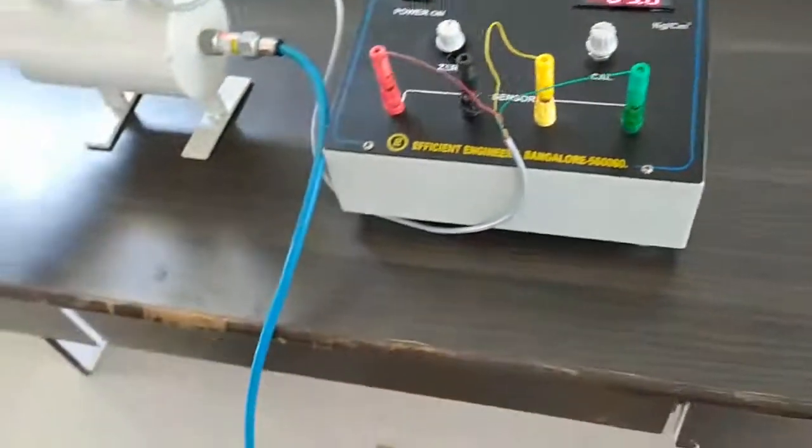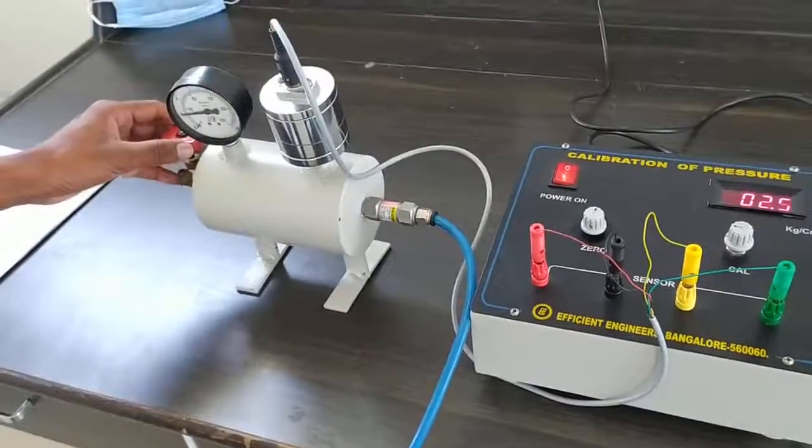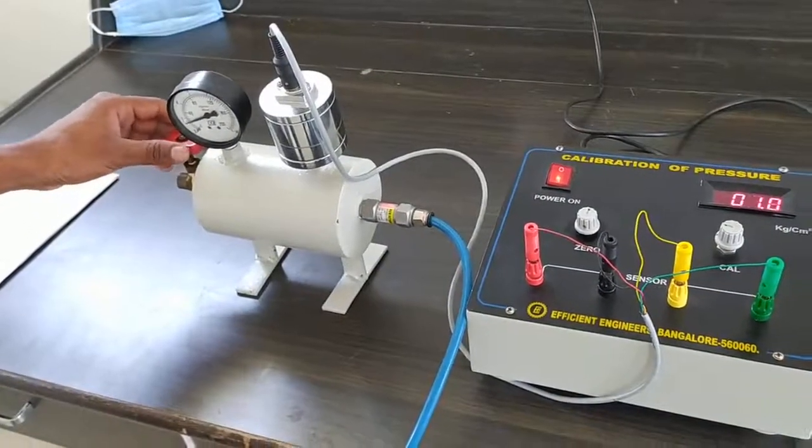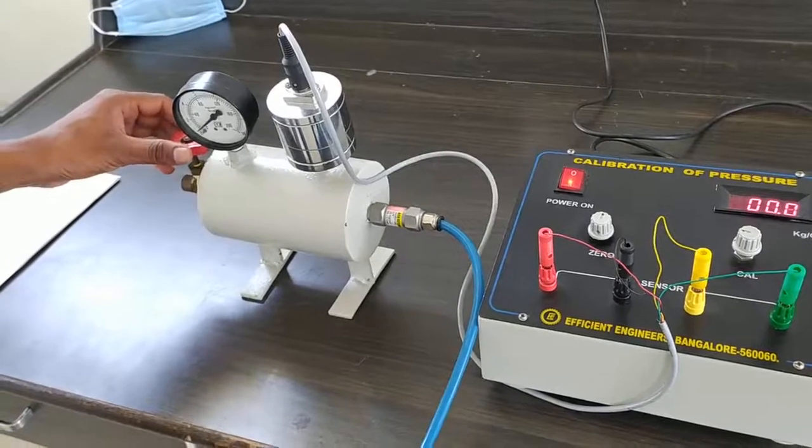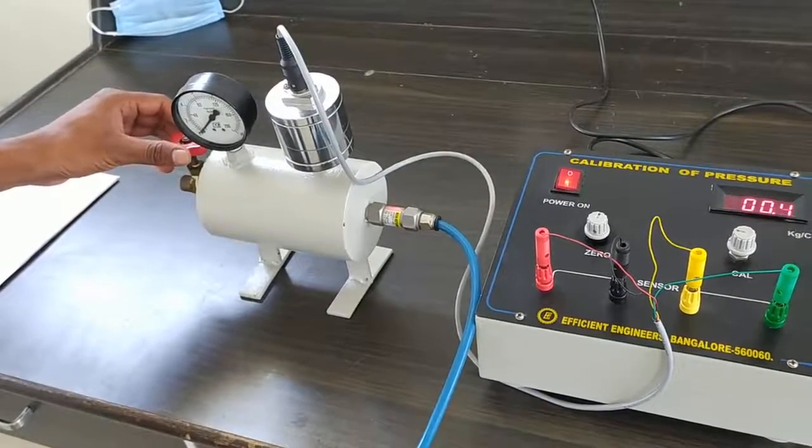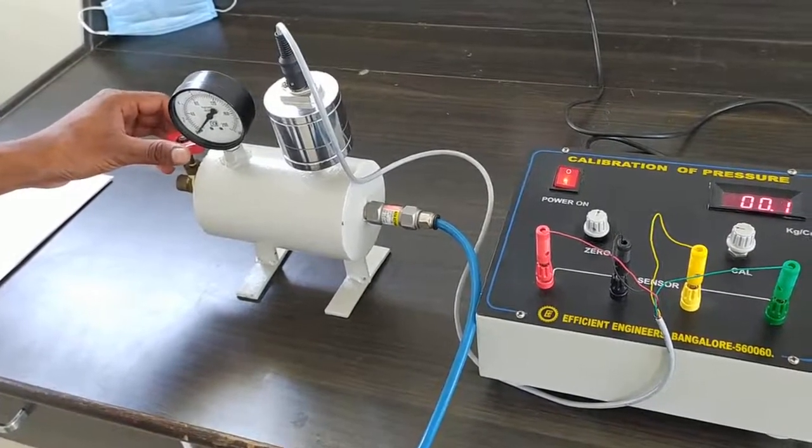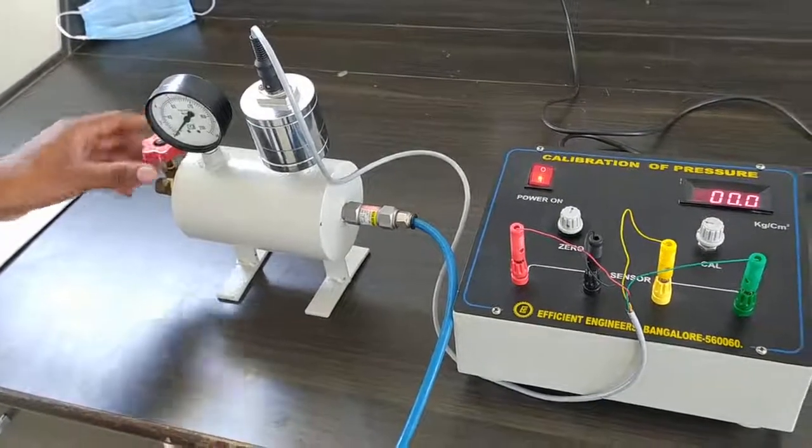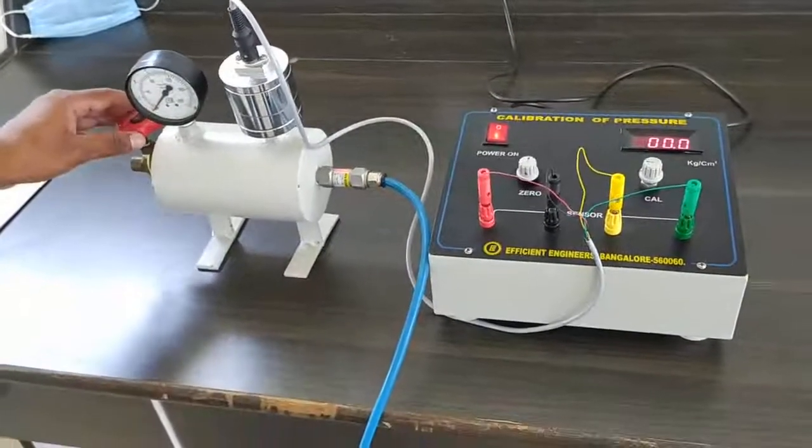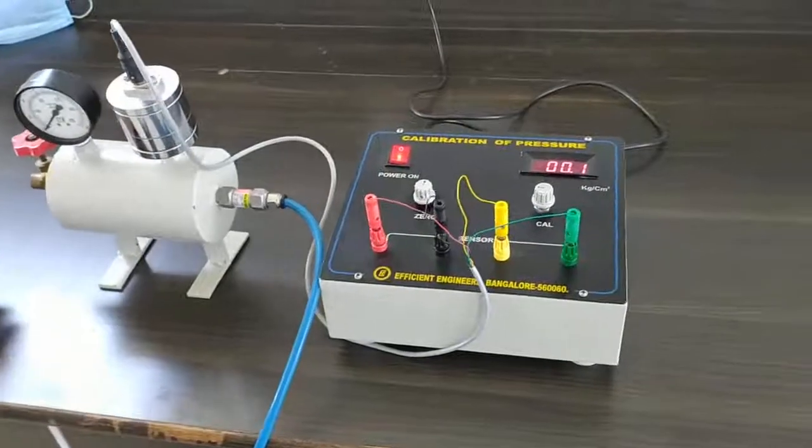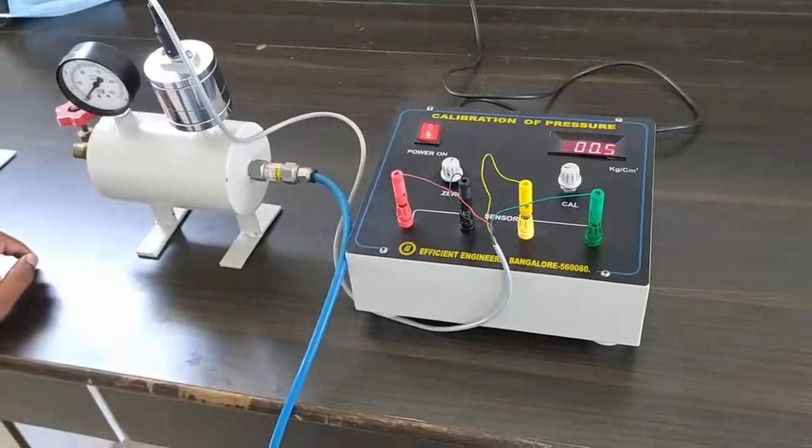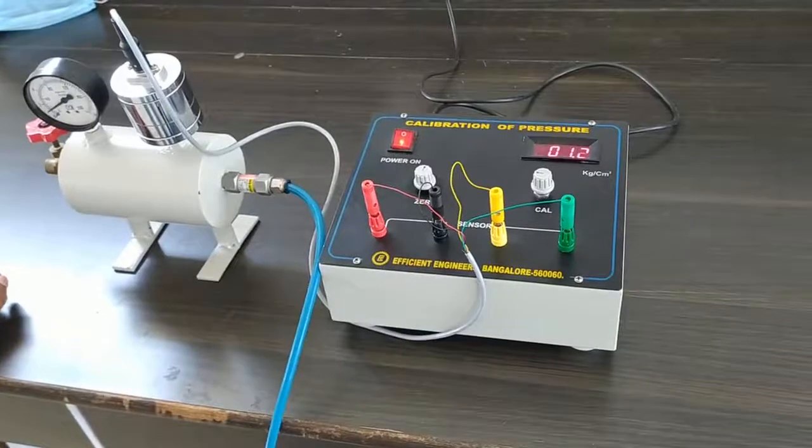And we have to leave the air which is inside the cell. In both cases, we have seen the zero value and we have to pump for 1 kg per centimeter square, which has to be shown the same in the digital also.